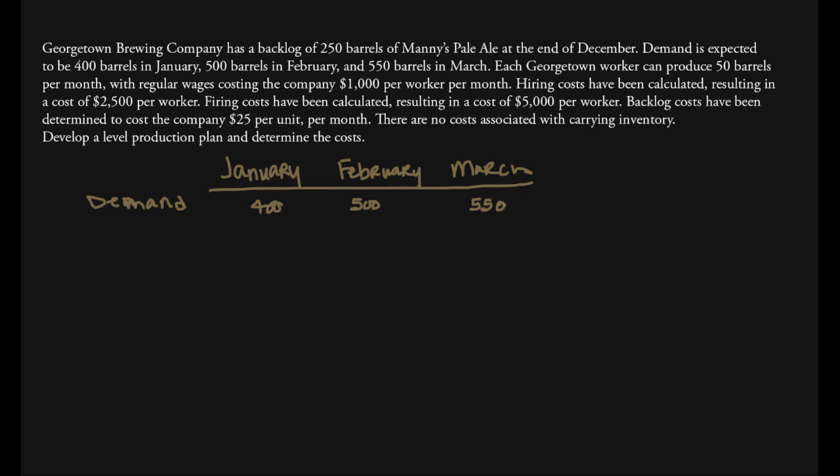Each Georgetown worker can produce 50 barrels per month with regular wages costing the company $1,000 per worker per month. Hiring costs have been calculated at $2,500 per worker. Firing costs have been calculated at $5,000 per worker. Backlog costs are $25 per unit per month, and there are no costs associated with carrying inventory.